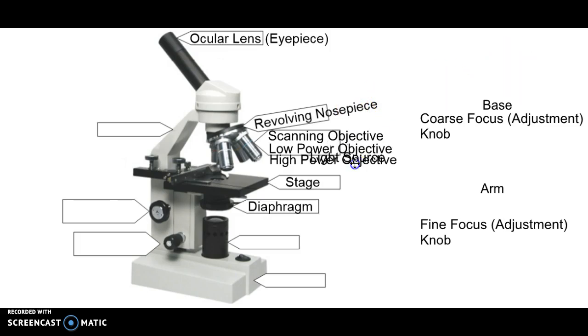Next up is the light source. Obviously, this is the light. You turn it on to be able to see the specimens. Down here at the bottom is the base. The base really doesn't have too much of a function except to be the stable part of the microscope. It does have some of the electrical components to it.